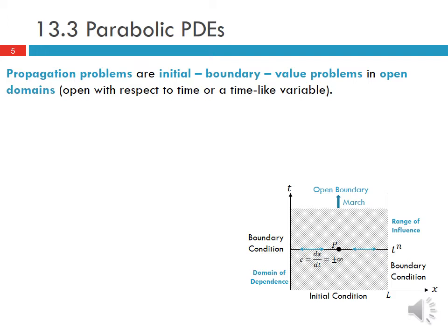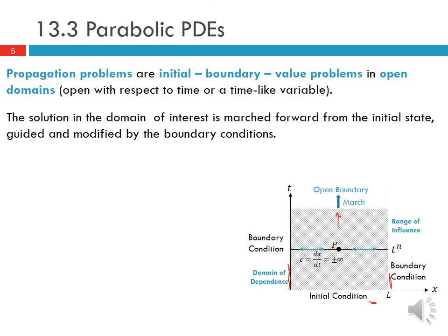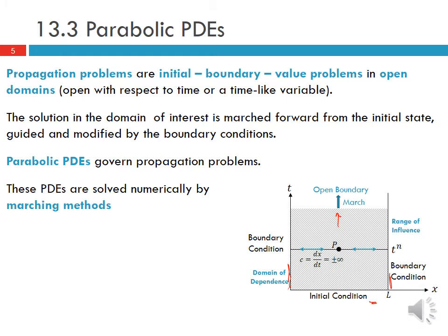We specify an initial condition and our boundary conditions are specified along the boundaries of the domain, then we march forward in time with this open boundary in the time domain. The solution in the domain of interest is marched forward from the initial state and guided and modified by the boundary conditions. Parabolic PDEs govern these propagation problems and are solved numerically by marching methods.